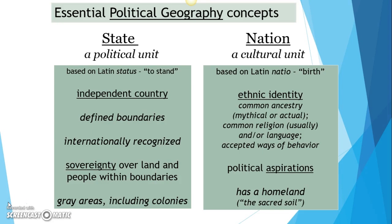There are some gray areas when talking about these things. For example, colonies often have some of these characteristics but not all — they may have defined boundaries and some sovereignty, but may not be internationally recognized. There's also the issue of groups trying to break away from a country: they may have a defined boundary, some sovereignty, and a defined population, but not be internationally recognized, or recognized by only a handful of countries.